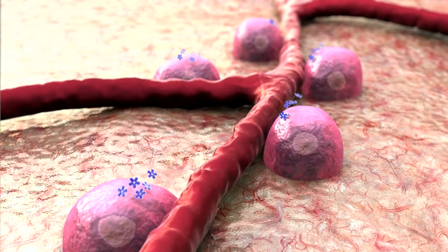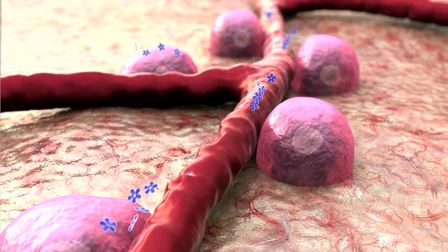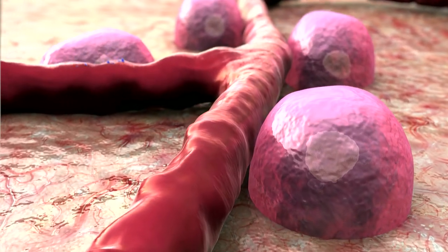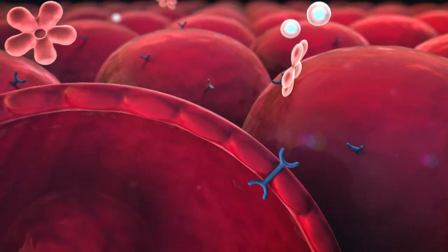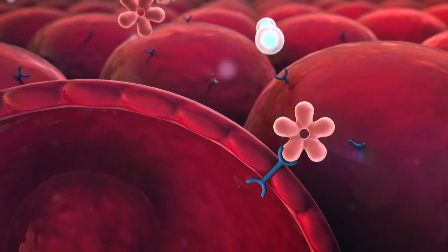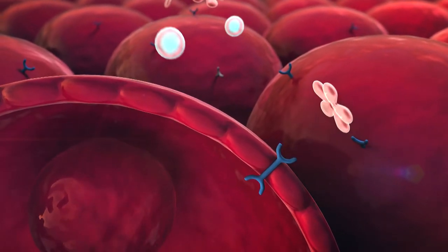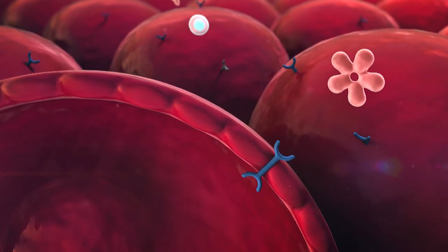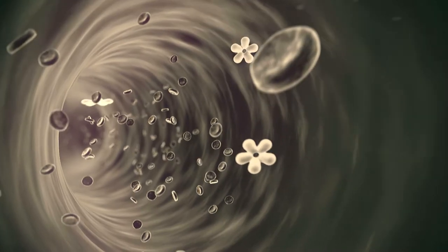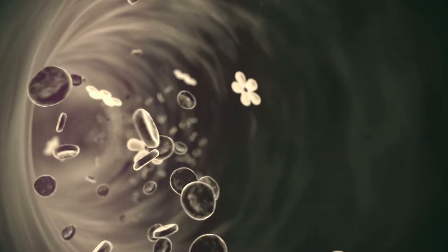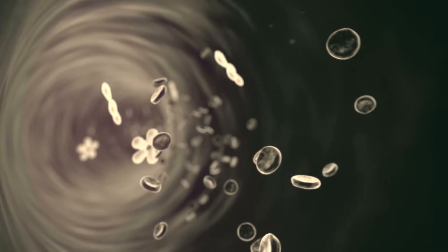O açúcar é necessário para o metabolismo de todas as células. Para ser transportado para dentro das células, o nosso pâncreas produz insulina, hormona que vai captar a glicose da corrente sanguínea e levá-la para as células onde será utilizada como energia. A diabetes é uma doença metabólica crónica que pode ter várias causas e que se caracteriza pelo aumento dos níveis de açúcar no sangue, glicémia.